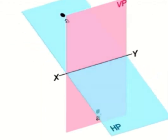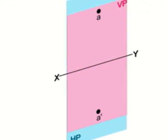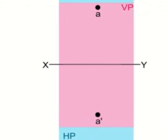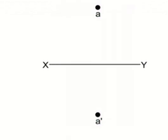This is how we rotate the planes, and the projections follow accordingly. We have the projection A' below the XY line and A above the XY line.